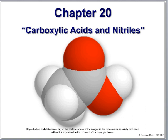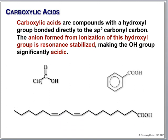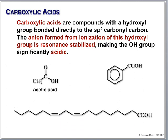All right, let's go ahead and get started. Chapter 20, we're doing carboxylic acids. We'll also do nitriles. Most of the carboxylic acids — they're both the same oxidation state. We've talked about carboxylic acids a lot. We've used things like acetic acid. We've used benzoic acid, or at least as derivatives.